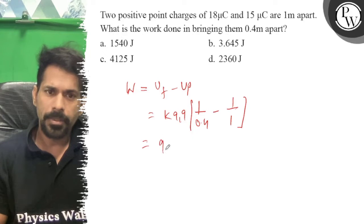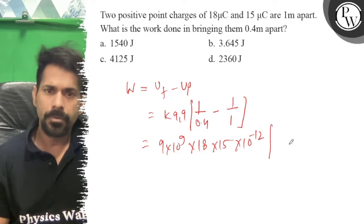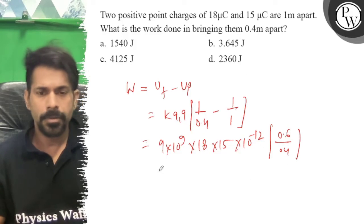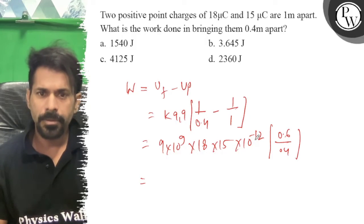K is 9 times 10 to the power of 9, into 18, into 15, times 10 power minus 12, into 0.6 upon 0.4. This will be 10 power minus 15, 9.